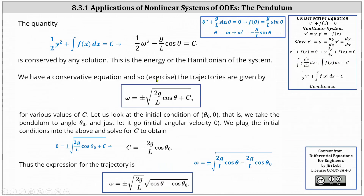Now let's go back and work on determining the equation of the trajectories. Because we have a conservative equation, the Hamiltonian — one-half y squared plus the integral of f of x dx equals c — is conserved by any solution. Going back to the pendulum equation, our function f is f of theta equals g divided by l sine theta, and the integral of g divided by l sine theta with respect to theta is negative g divided by l cosine theta. Therefore the Hamiltonian is one-half omega squared minus g divided by l cosine theta equals c sub one, and this is conserved by any solution. This is the energy or the Hamiltonian of the system.